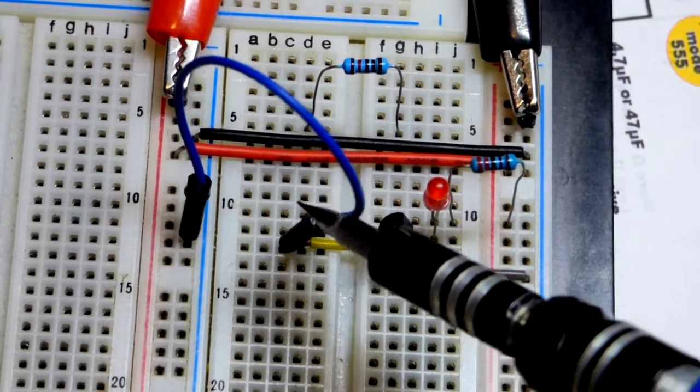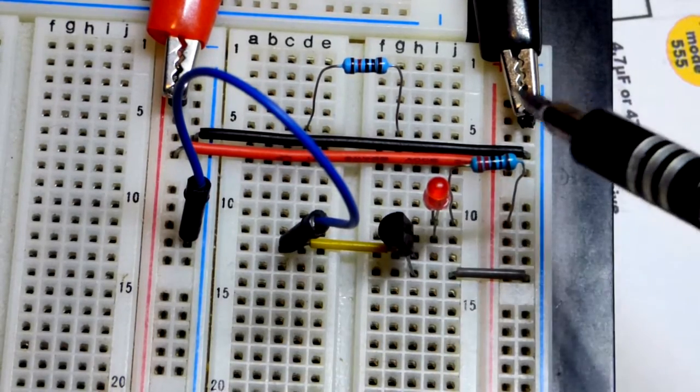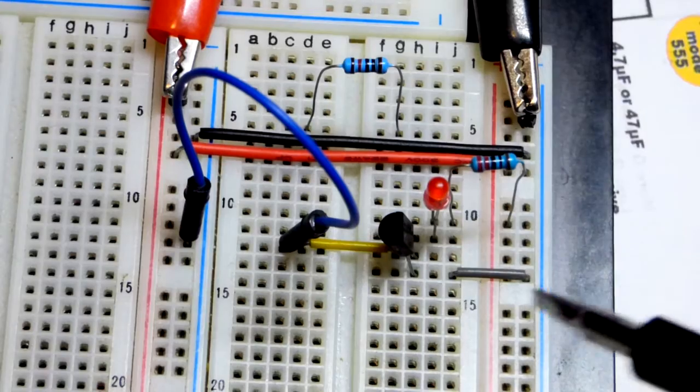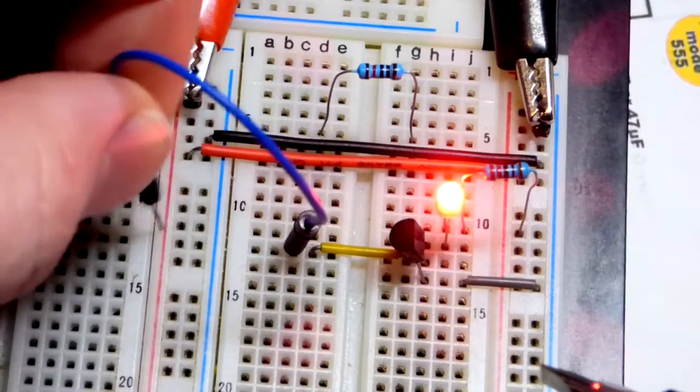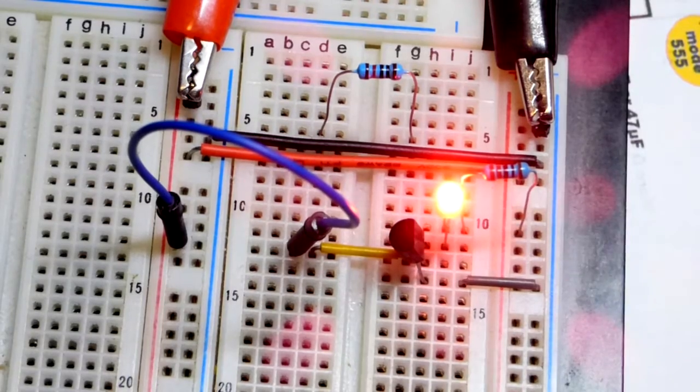The middle pin, the gate, we have going across these two jumpers, it's in the off position right now. There's 5 volts at the power supply right now. If I move the jumper to the positive supply, that turns it on.